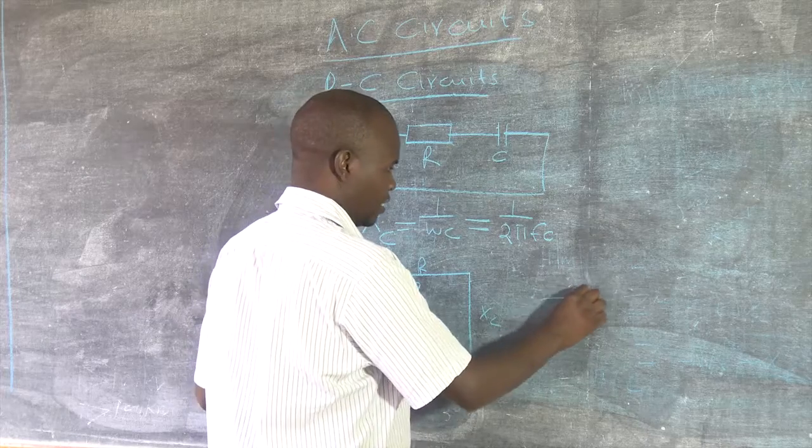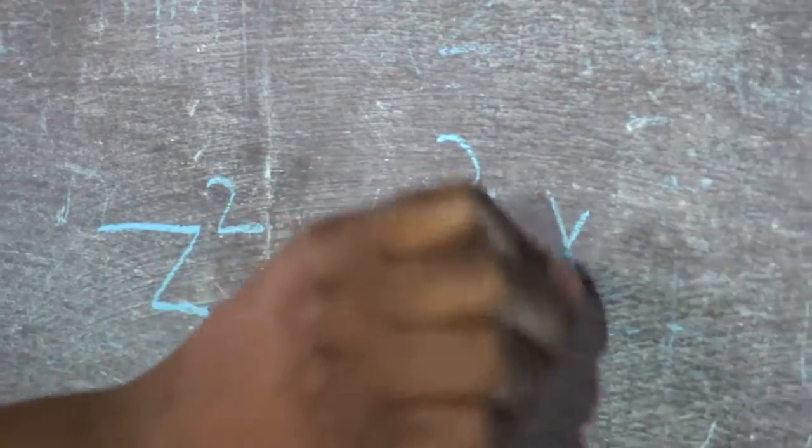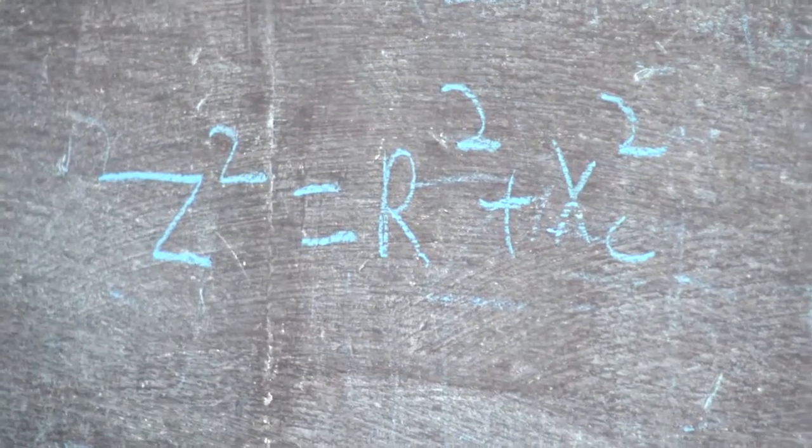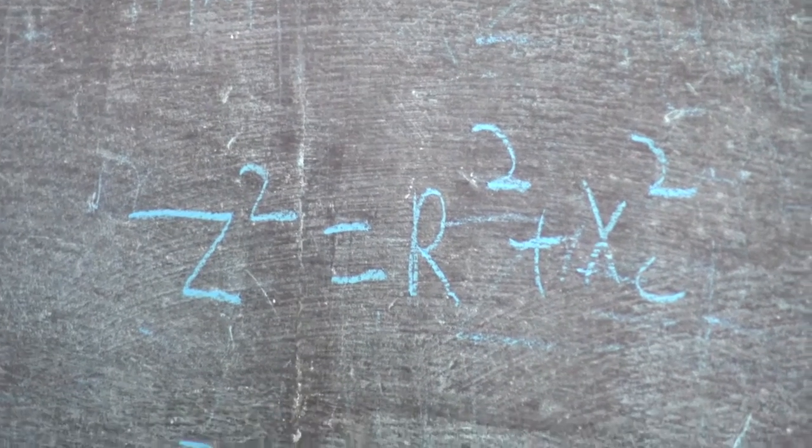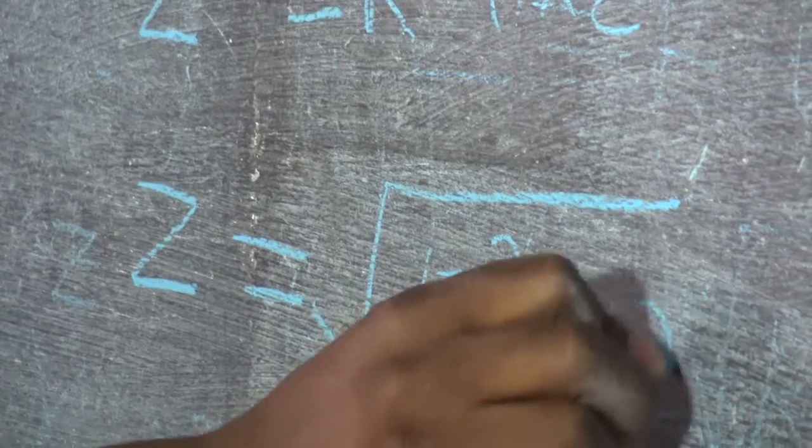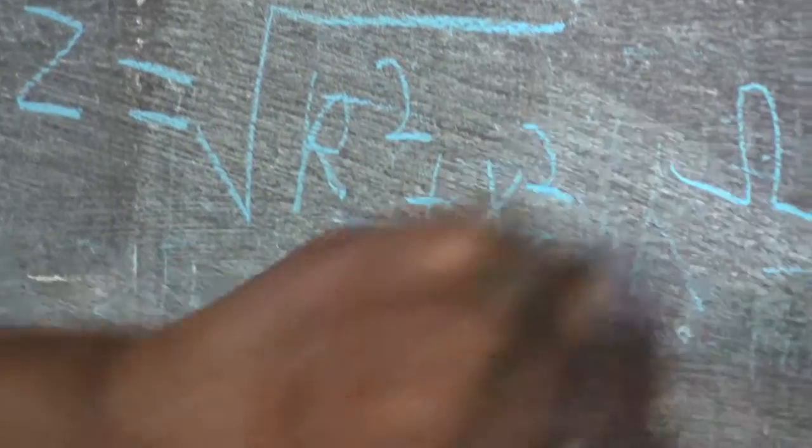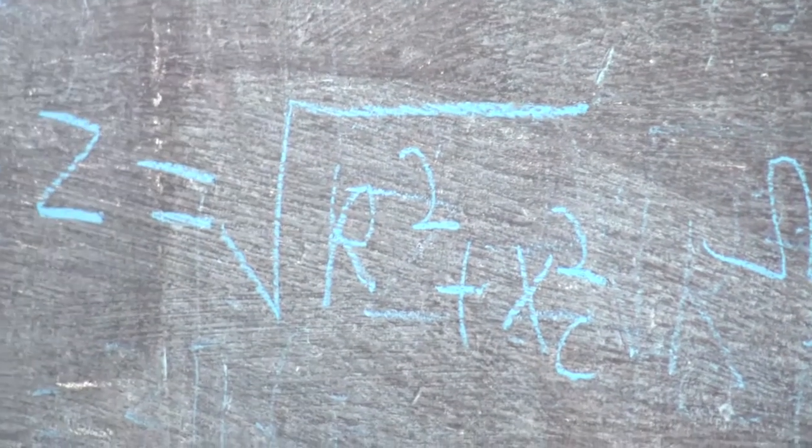So using Pythagoras theorem, Z squared equals to R squared plus XC squared. That's using Pythagoras theorem. If you can make Z squared to both sides, it will be this. The unit is ohms. That is the impedance.